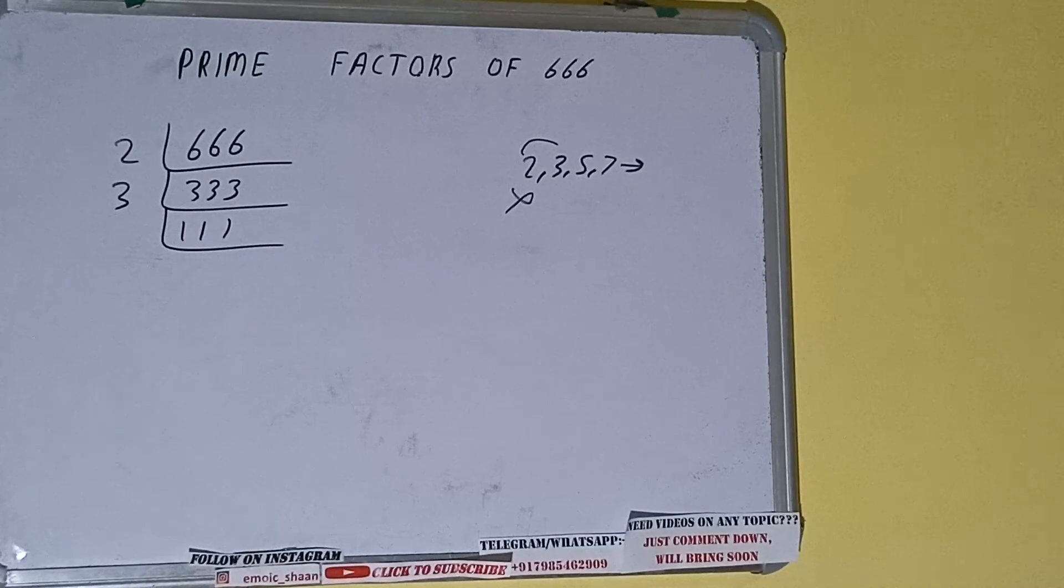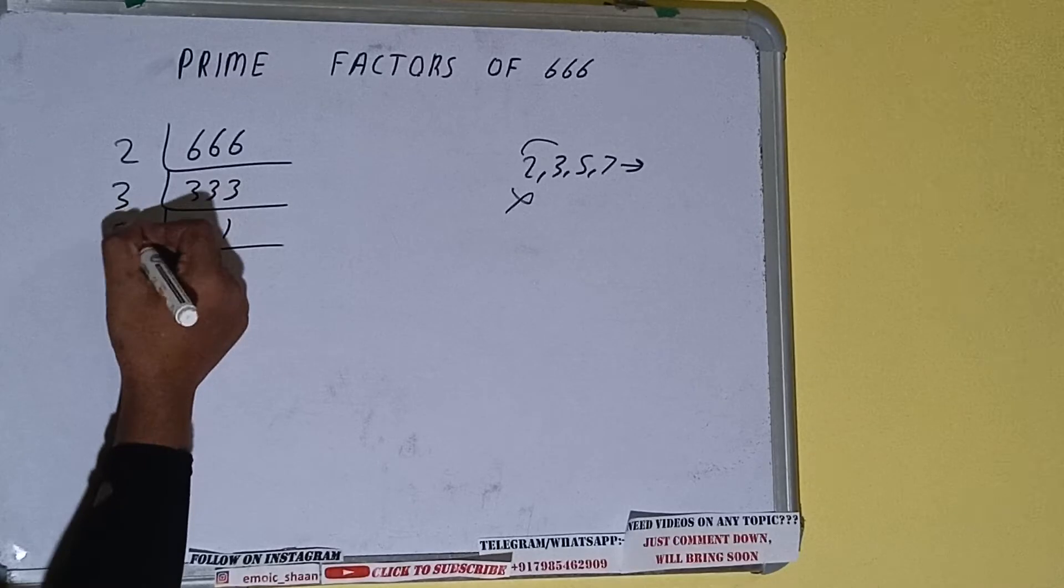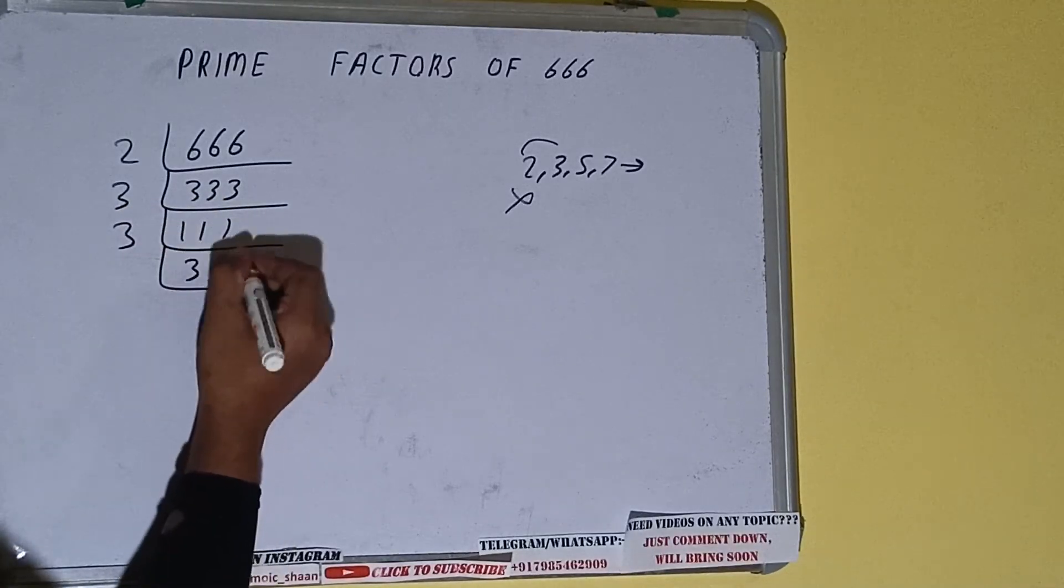Now is this 111 further divisible by 3? Let's check. 3 into 9 is 27, it is divisible by 3 so divide it. 3, 7 is 21. We'll be having 37.